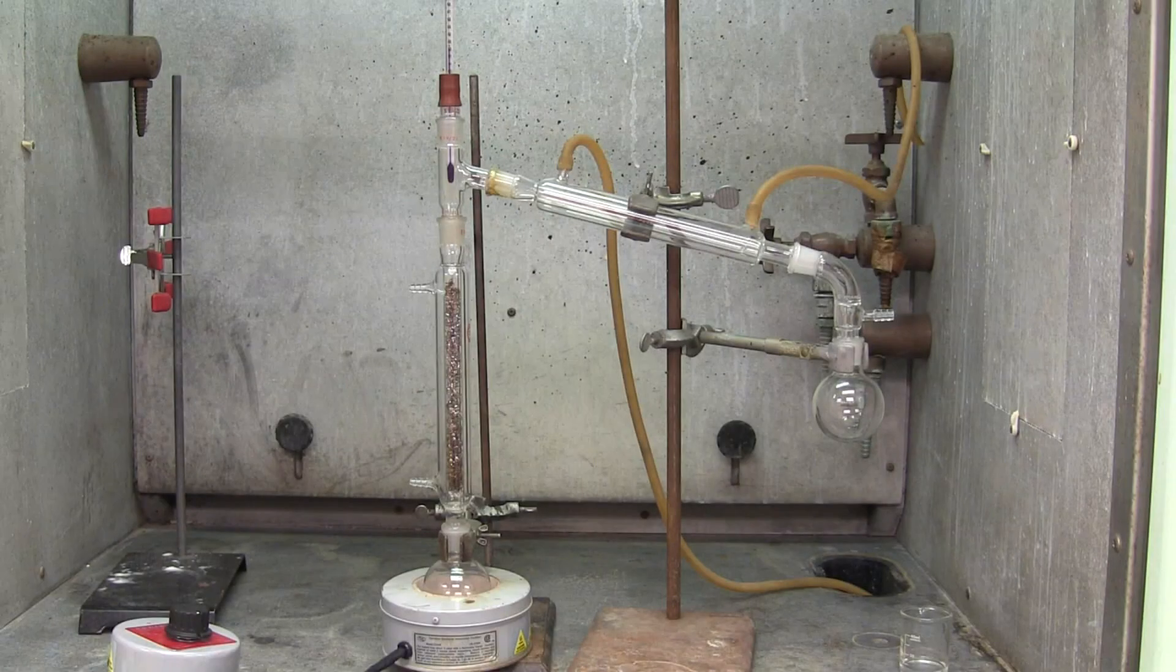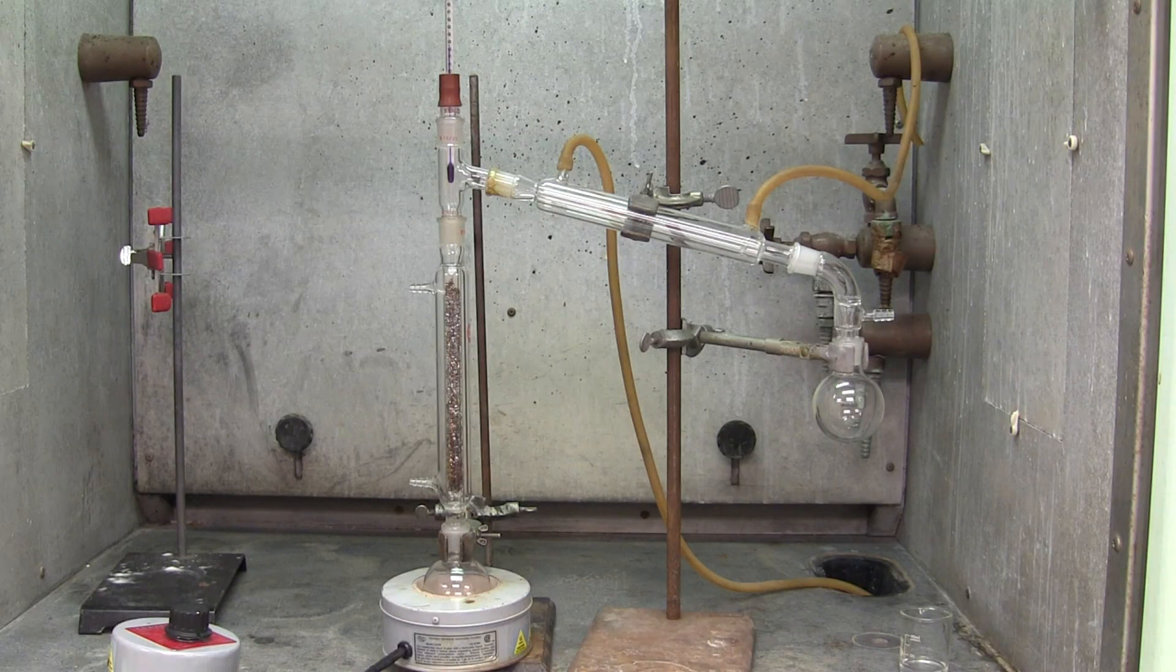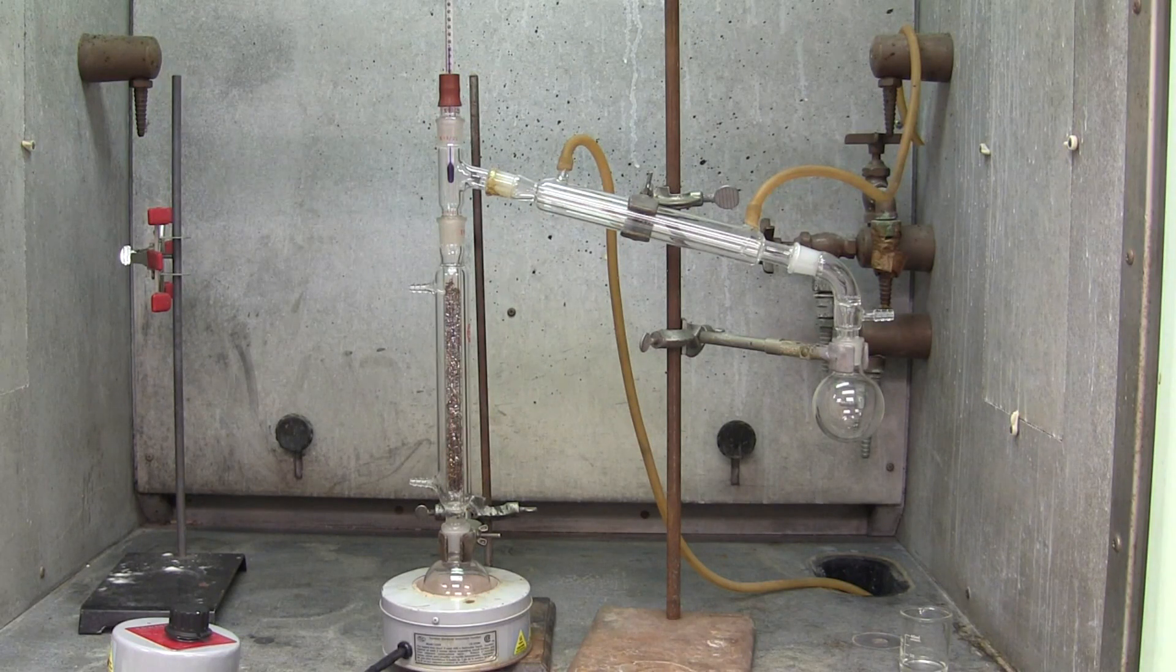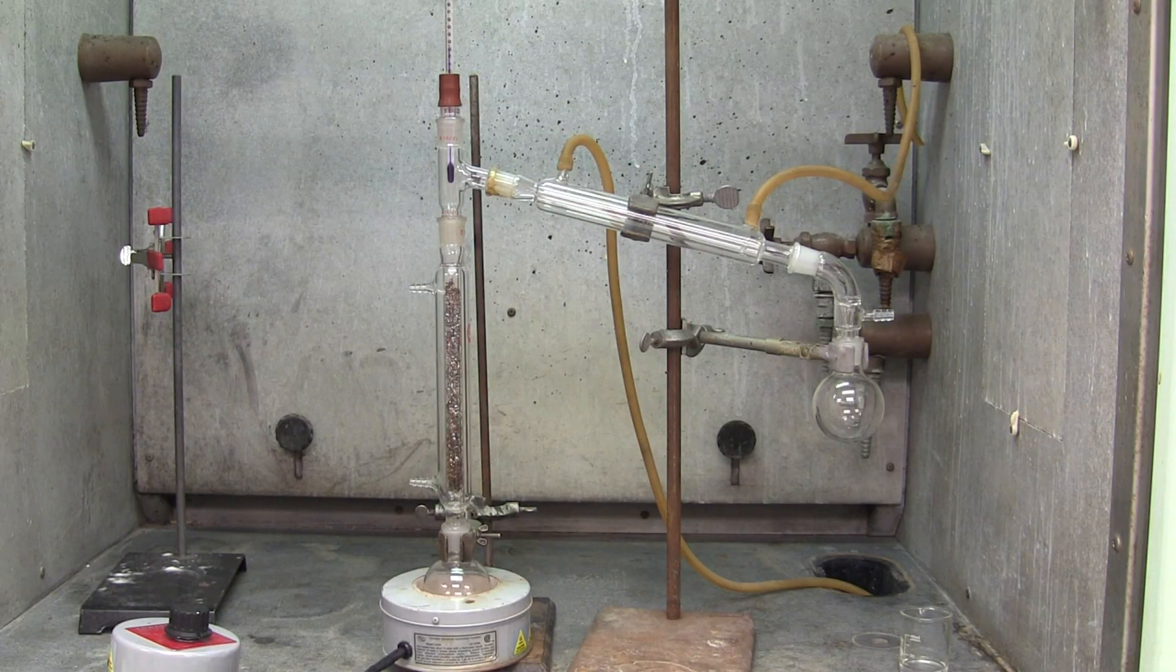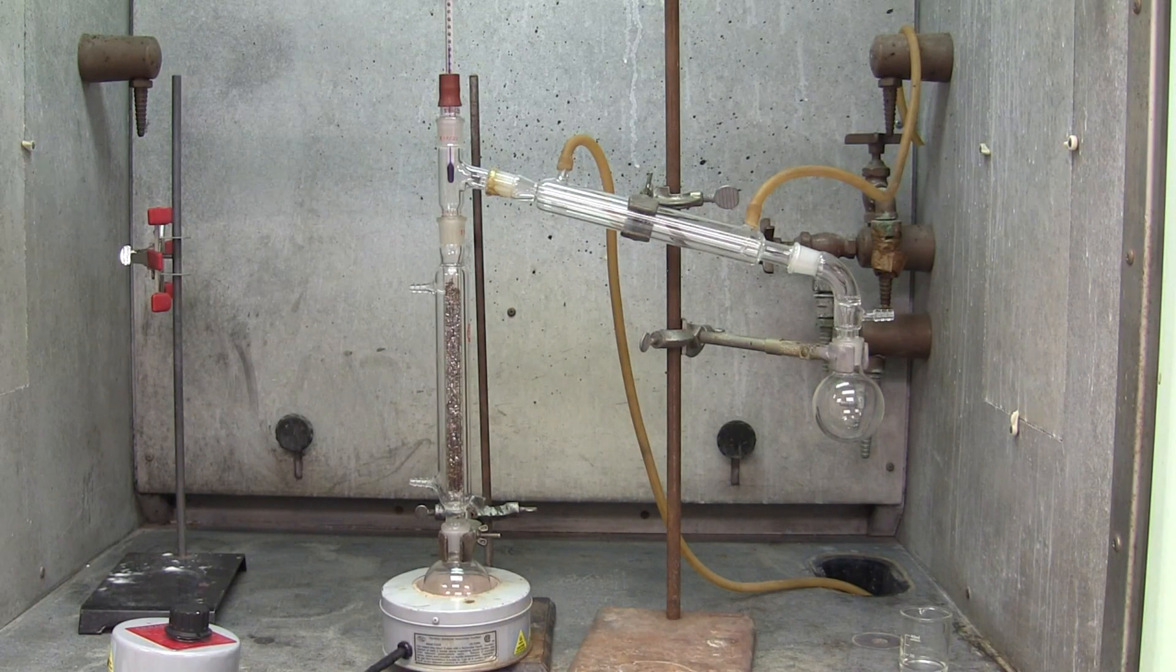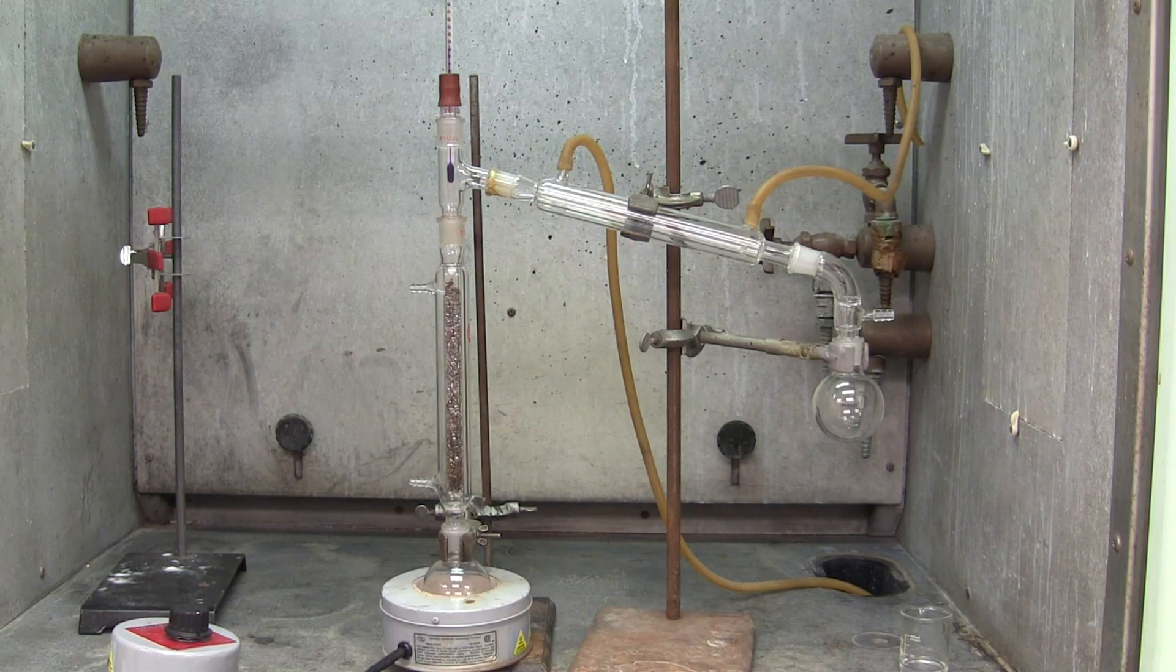In a fractional distillation, a fractionating column is added between the distillation head and the distilling flask. This method ensures that a liquid mixture with substances that have similar boiling points is separated efficiently.